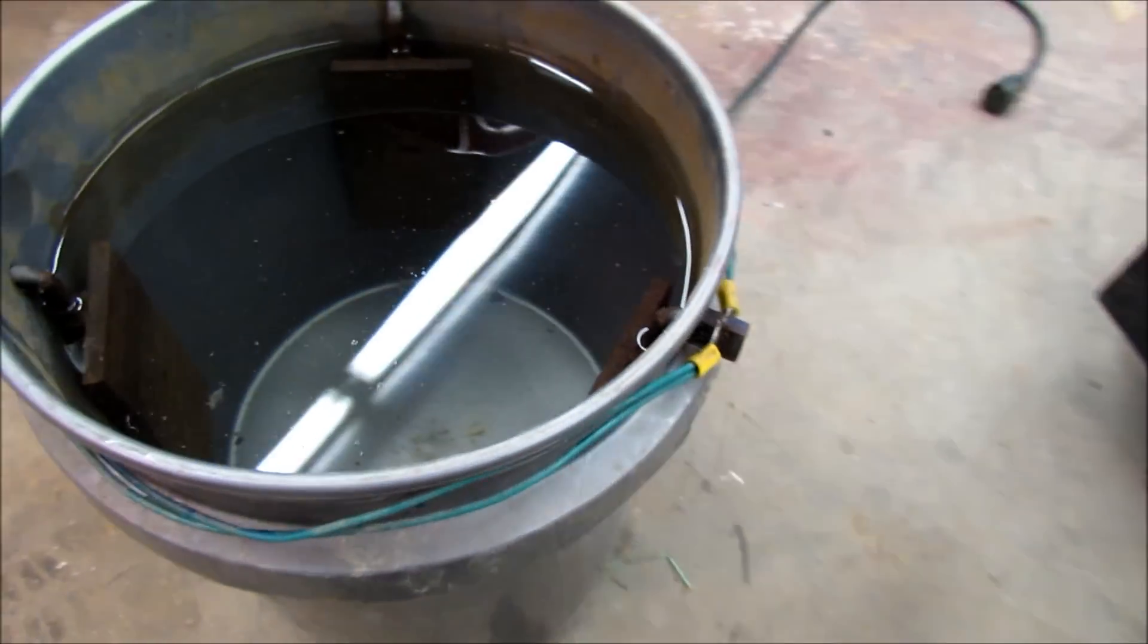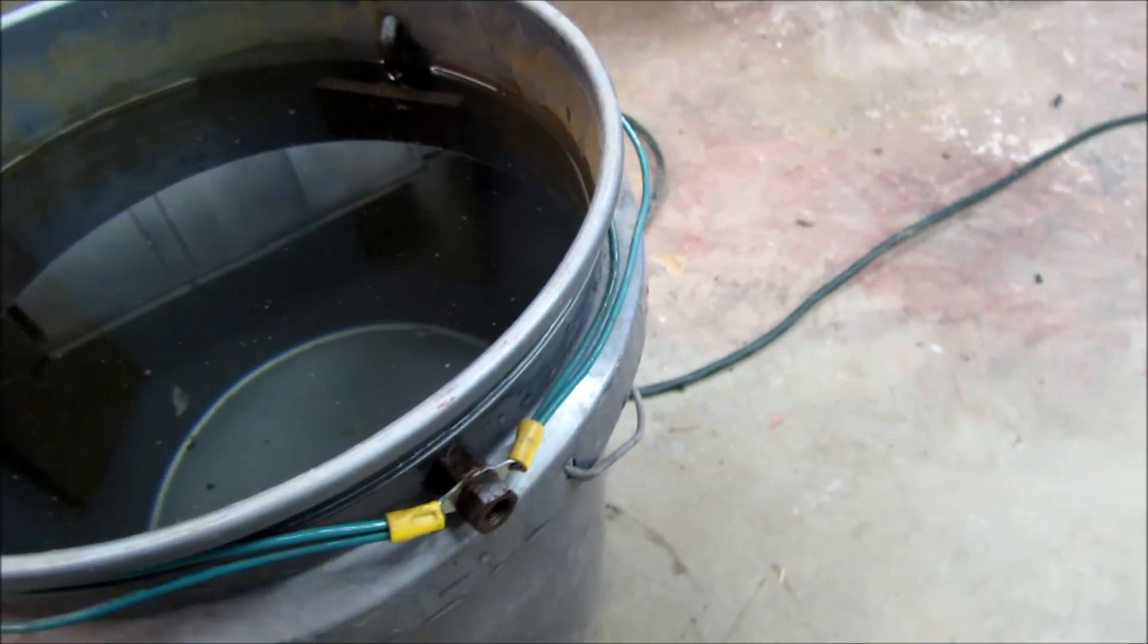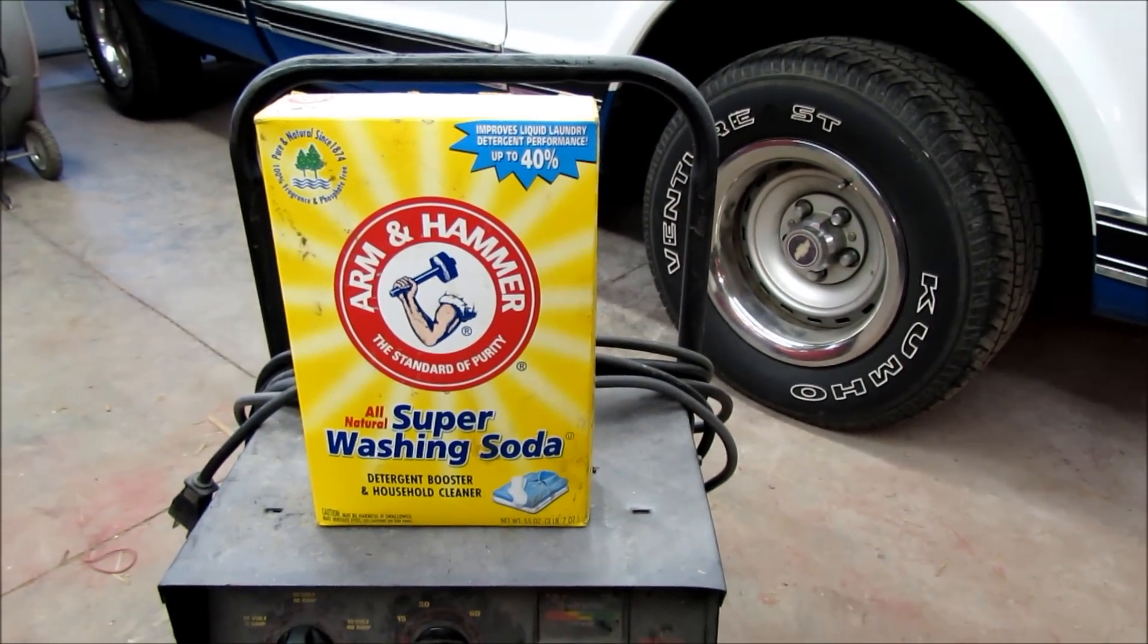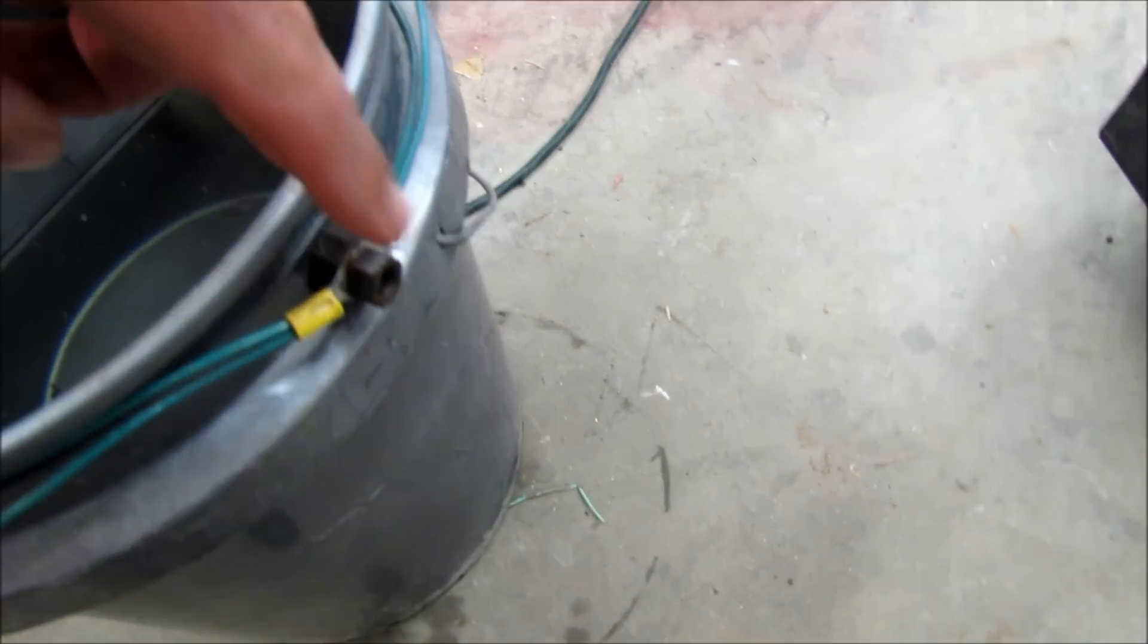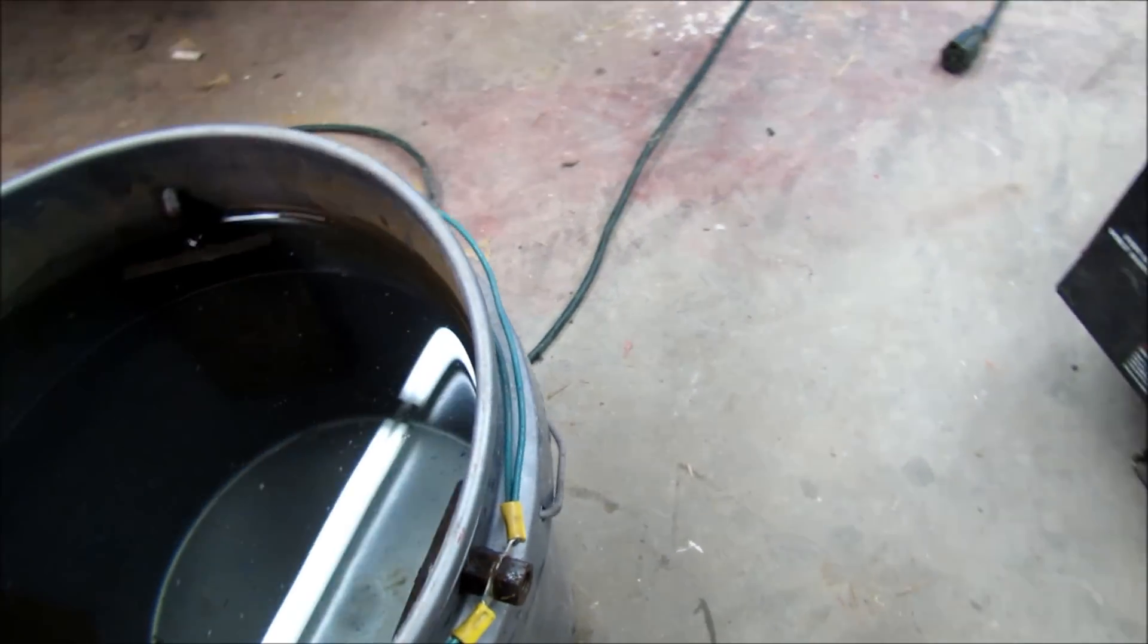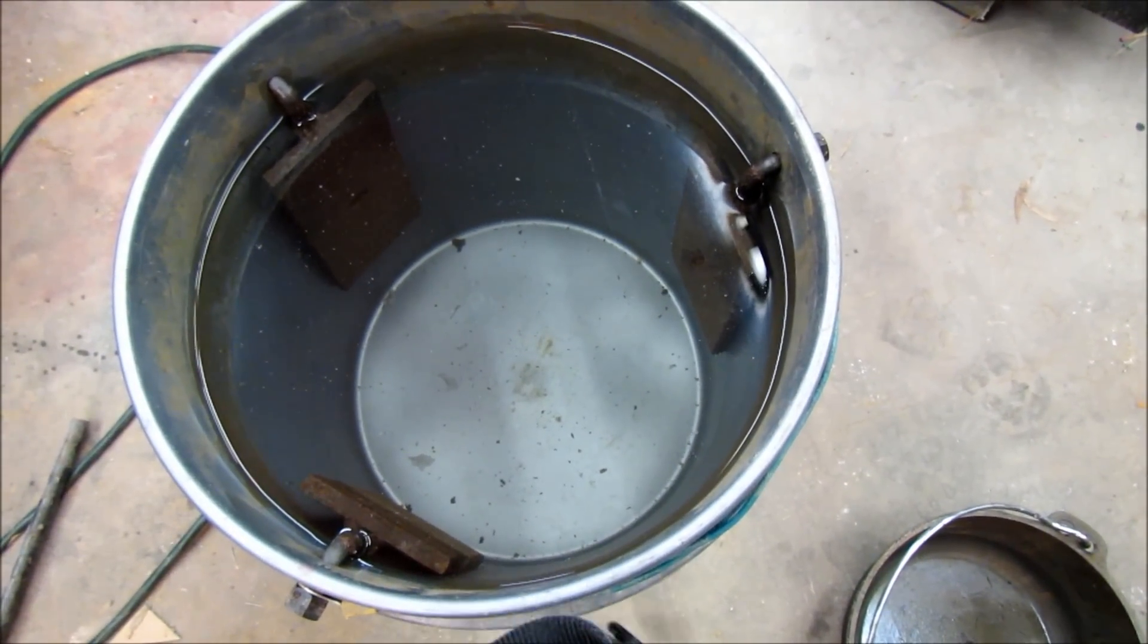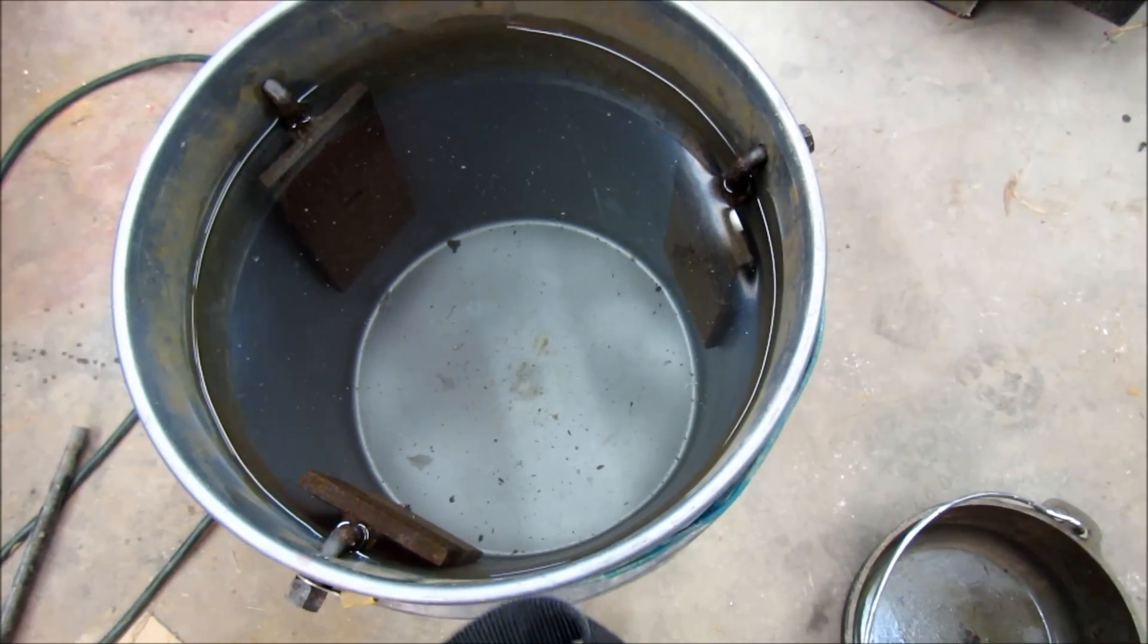And I've got some wires hooking all three together. It's just a bucket of water and you mix in some Arm & Hammer washing soda. Mix it up. Hook your battery charger to this post, the positive terminal. And then you hook your negative to the piece you're going to de-rust. Pretty soon bubbles will start forming and after a few hours the rust will be gone.